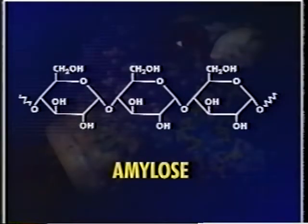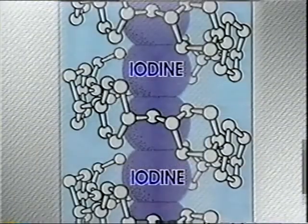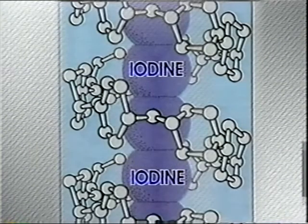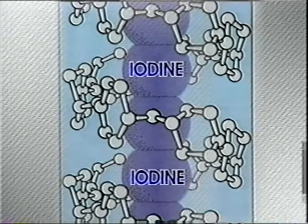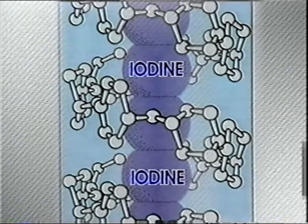Amylose is a continuous chain of alpha-glucose molecules. It forms a helical coil when dissolved in water. When iodine is added to a starch solution, the solution turns dark blue in color. Iodine molecules are trapped within this helix, and the interaction between iodine and starch gives rise to the dark blue complex.